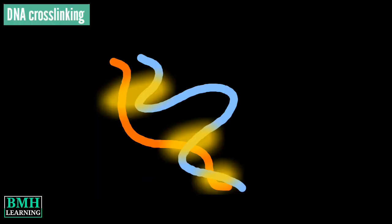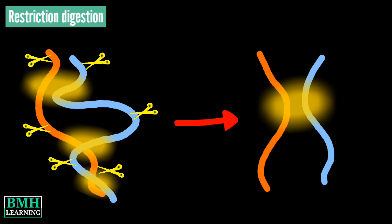The protocol involves cross-linking the cells with formaldehyde to form links between physically adjacent DNA regions. The cells are then permeabilized with their nuclei intact. A 4-cutter restriction enzyme is used to digest the chromatin into multiple DNA fragments.